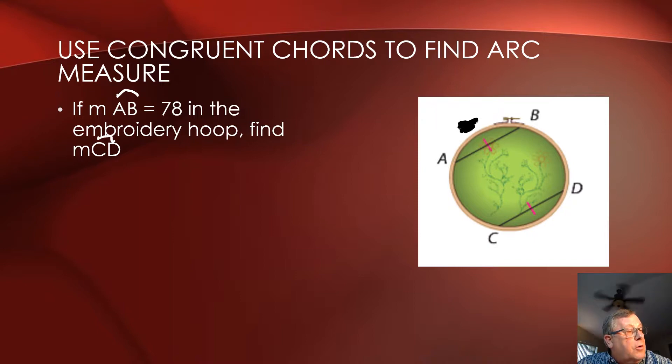In the same circle, or in congruent circles, two minor arcs are congruent if and only if their corresponding chords are congruent.